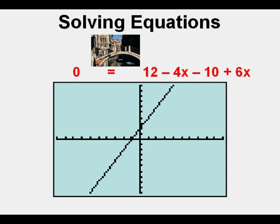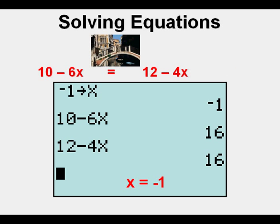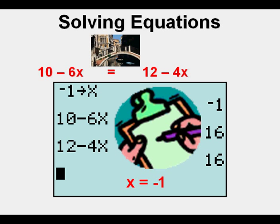It looks like x is negative 1. Let's check negative 1 as the right answer by going back to the original equation, store negative 1 for x, then enter each side of the equation and see if you get the same thing. And since both sides of that equation are 16, we know that negative 1 is the correct solution. Check.